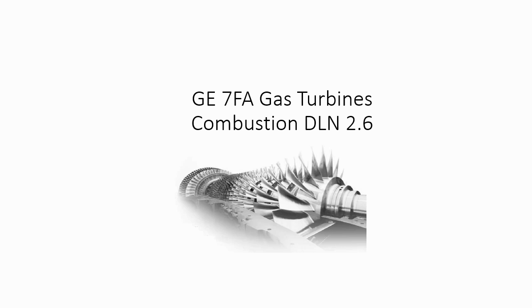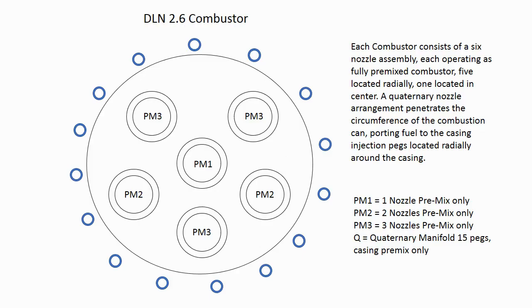DLN 2.6 combustor. Each combustor consists of a six nozzle assembly, each operating as a fully premixed combustor, five located radially and one located in the center. The quaternary nozzle arrangement penetrates the circumference of the combustion can, porting fuel to the casing injection pegs located radially around the casing.